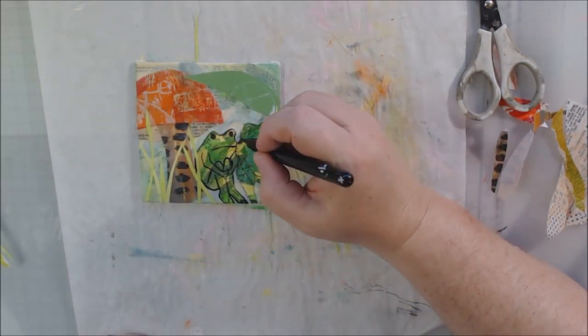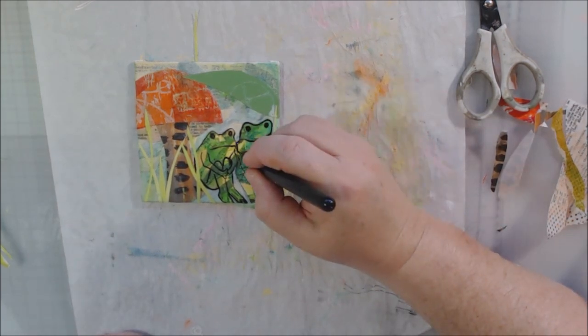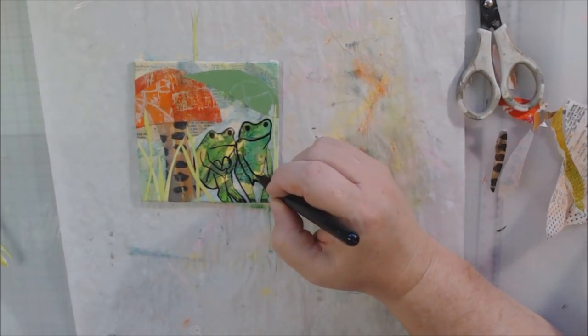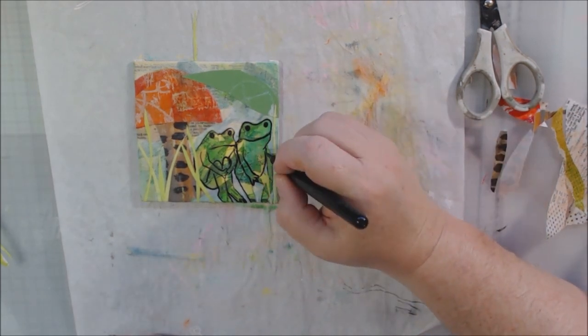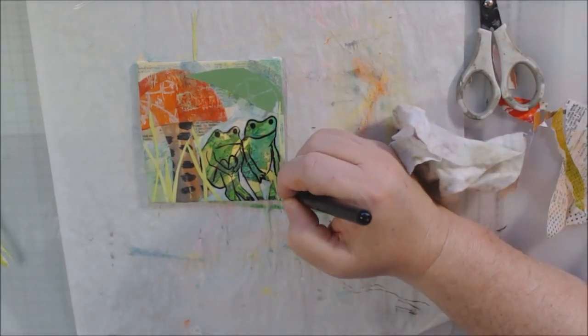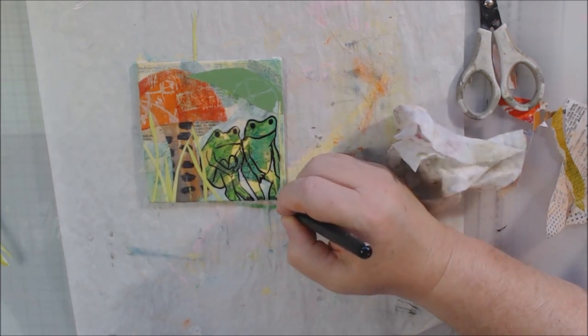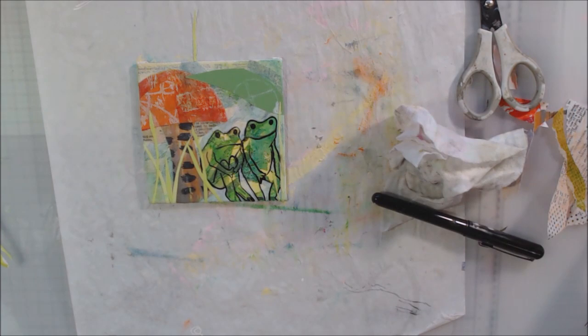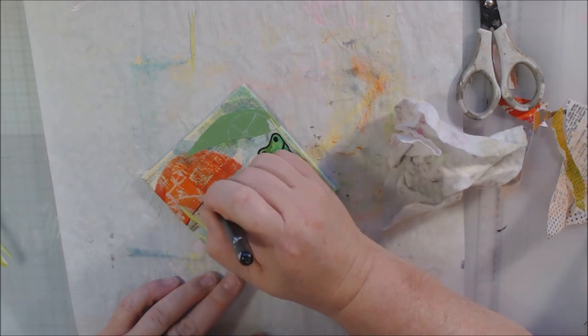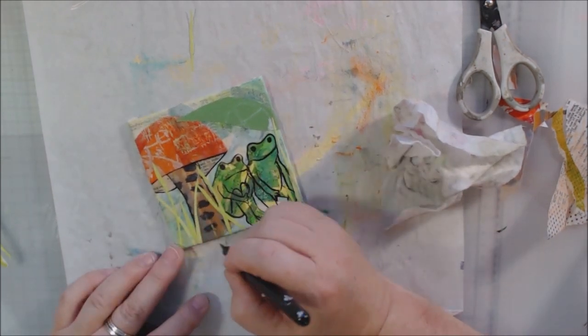And I am actually going around the lines of everything on the frogs and illustrating, making it more of a line drawing so they really do stand out from the background and you're not distracted by all the other pattern. I maybe should have done this before I put the grass on because the grass is kind of getting in my way because I did put a couple of the pieces over them. I'm also going to draw around the mushroom.